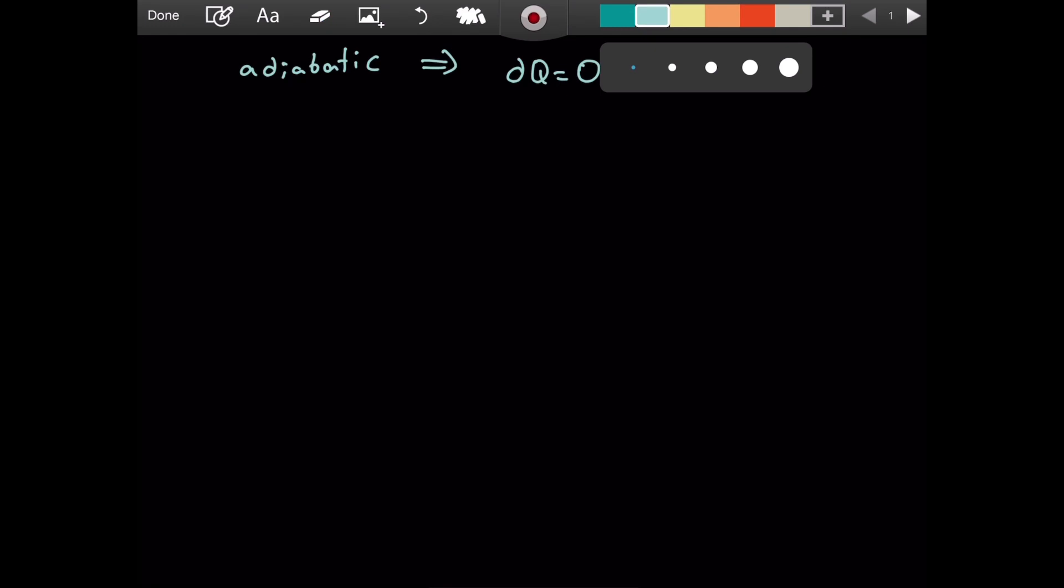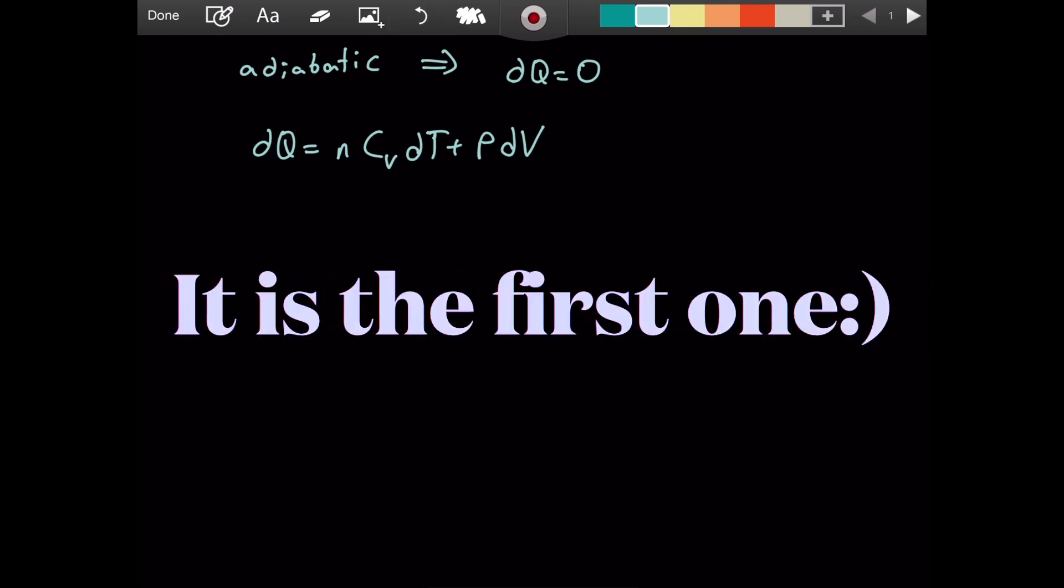We know that in the last thermodynamics video we used the fact that dQ equals n Cv dT plus P dV. This is either the second or third law of thermodynamics, I think it's the second one. We know this is going to be zero because that is by definition an adiabatic process.